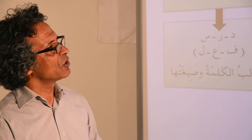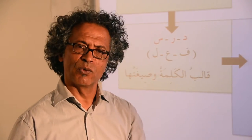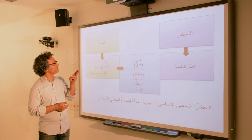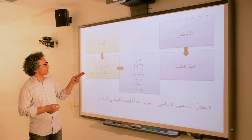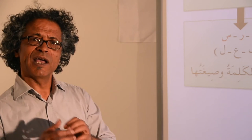الجذر في العربية هو أصل الكلمة — is really the root of the word where the word is derived from. الوزن قالب الكلمة وصيغتها — is actually the mold or the form within which the word fits.